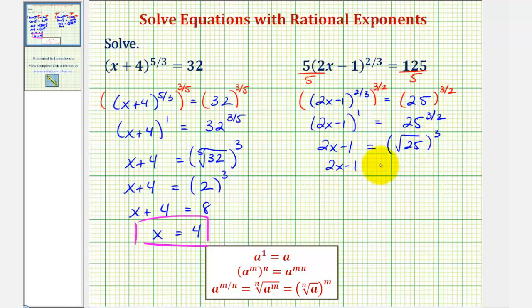So we have 2x minus 1 equals the square root of 25, which is 5. 5 cubed equals 125. And now to solve for x, we add one to both sides. That would give us 2x equals 126. Divide both sides by two. Our solution is x equals 63.